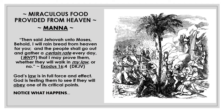Miraculous food was provided from heaven — manna. Manna was new, unusual, and very different. They had never seen anything like it before. Manna means 'what is it?' Then Jehovah said to Moses: 'Behold, I will rain bread from heaven for you, and the people shall go out and gather a certain rate every day — that I may prove them whether they will walk in my law or no.' — Exodus 16:4. God's law was in full force and effect, and he was testing them to see if they would obey one of its critical points.